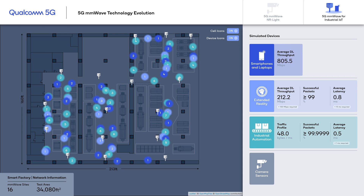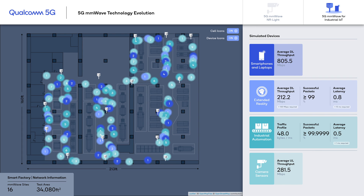5G can also cut the wire for extremely high-performance industrial automation use cases. Time-sensitive networking, coordinated multipoint, and eURLLC are key 5G capabilities that can deliver six-nines reliability with millisecond-level latency. As shown here, the millimeter wave system can meet these requirements. In addition to supporting high-performance applications, millimeter wave can also scale down to support lower-complexity IoT devices, like industrial camera sensors, using just 100 MHz bandwidth. We can see the system supporting a large number of devices with a small impact to network resource utilization.